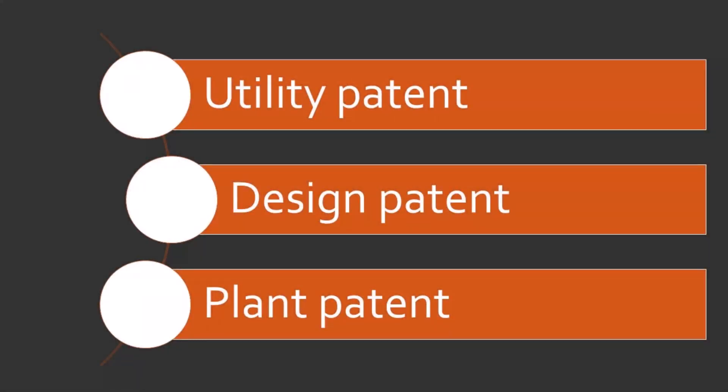So here are the three kinds of US patents: utility, design, and plant. We'll talk more about each in a bit, but let's run down the list quickly. I'm using the exact definitions from the USPTO here, and I'll link to those in the description. Utility patents are for inventing a new or improved and useful process, machine, article of manufacture, or composition of matter.